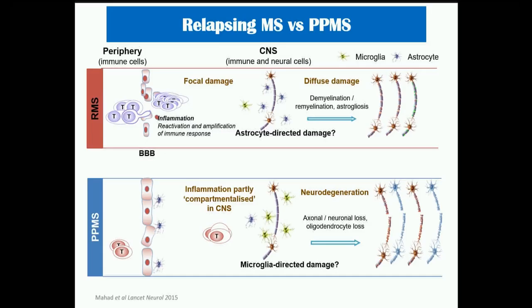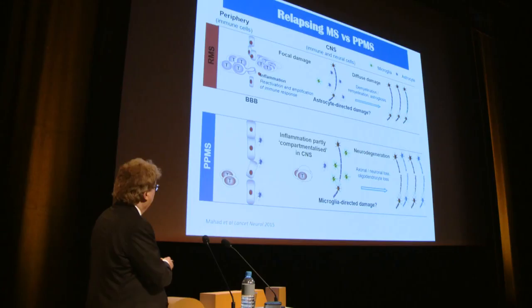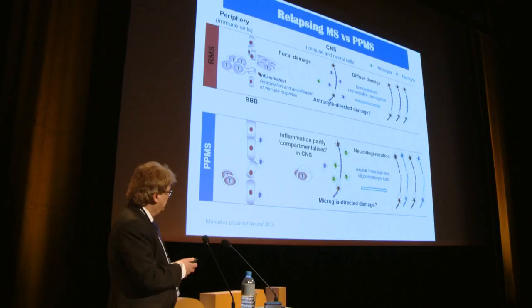Mahad and colleagues, including Hans Lassmann, contrasted relapsing versus progressive MS pathogenesis. In relapsing-remitting MS, the peripheral immune system — autoreactive T cells — invades the CNS causing demyelination and axonal damage. In progressive stages, inflammation becomes compartmentalized within the CNS, secluded from regulatory signals from the outside.